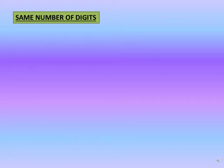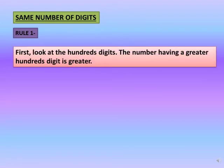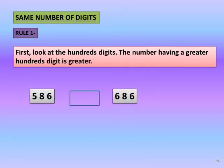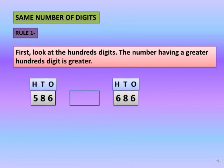Case 2: When there are same number of digits. Rule 1: First look at the hundreds digits. The number having a greater hundreds digit is greater. Let us compare 586 and 686.